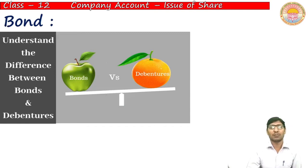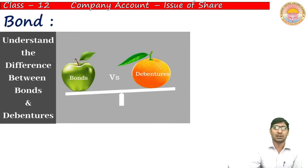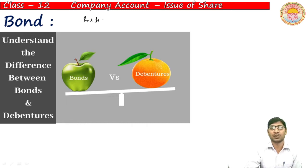The next topic is bonds. Bonds are much similar to debentures — they are nearly the same instrument. However, the main difference is the rate of interest: debentures carry a prefixed rate of interest, whereas bonds do not carry a predetermined rate of interest.